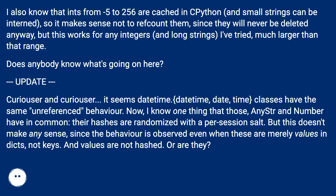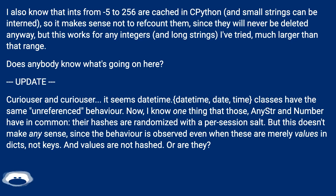Does anybody know what's going on here? Update: curiouser and curiouser. It seems datetime classes have the same unreferenced behavior. Now I know one thing that those, str, and numbers have in common: their hashes are randomized with a per-session salt. But this doesn't make any sense, since the behavior is observed even when these are merely values in dicts, not keys. And values are not hashed. Or are they?